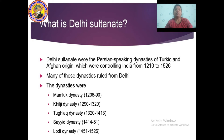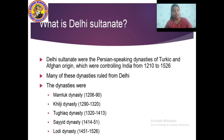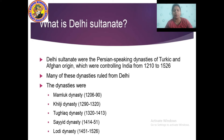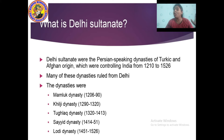Delhi Sultanate were the Persian-speaking dynasties of Turkic and Afghan origin which were controlling India from 1210 to 1526. Many of the dynasties ruled from Delhi. Delhi was not a small or unimportant place — it has been an important place since a long time.